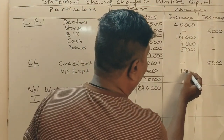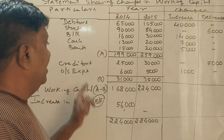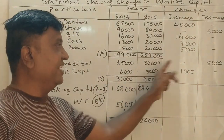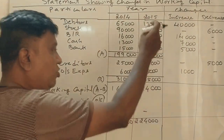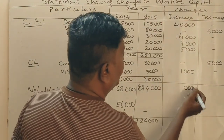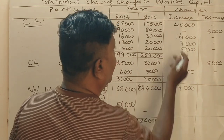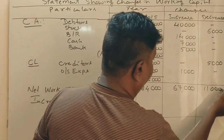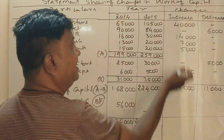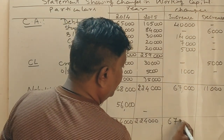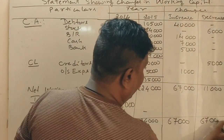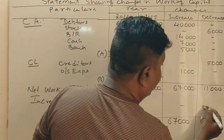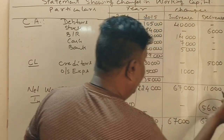When current liability decreases, it goes to the increase column. Totaling the increase column: the figures add up to 67,000. The decrease column totals to 11,000. So the net increase in working capital is 67,000 minus 11,000 equals 56,000 rupees. This balances with our earlier calculation of the increase in working capital.